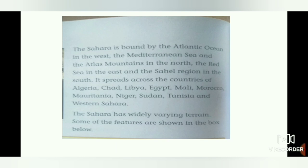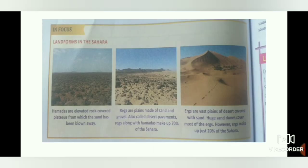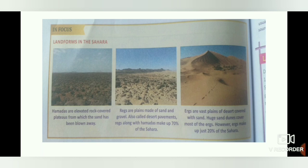The Sahara extends from the east coast to the west coast of North Africa. The main physical features of the Sahara are the Hamadas — elevated rock-covered plateaus from which the sand has been blown away. The regs are plains made of sand and gravel. And ergs are vast plains of desert covered with sand. Huge sand dunes cover most of the ergs. However, ergs make up just 20% of the Sahara and 70% are regs.